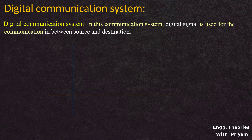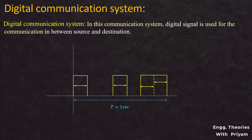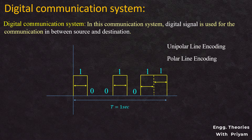A digital signal consists of discrete values rather than continuous values. It carries binary data in the form of 0 and 1. When using line coding schemes, we can apply two methods: unipolar and polar. In unipolar line encoding, the digital signal stays on or above the x-axis. In polar line encoding, the digital signal is available on both sides of the x-axis. Here, unipolar line encoding is used to represent the digital data 1001011.